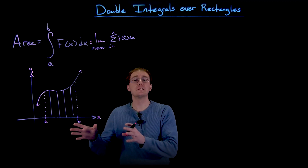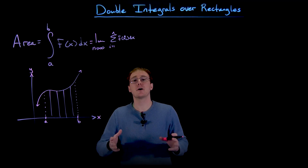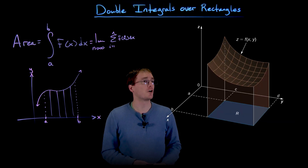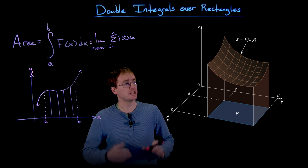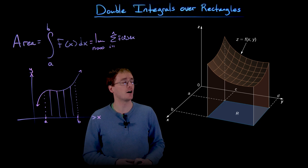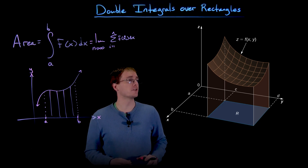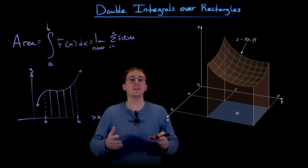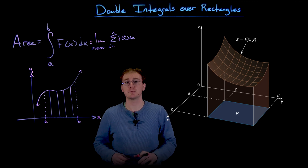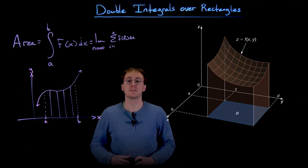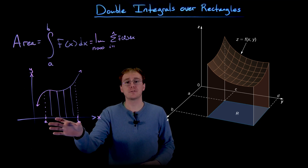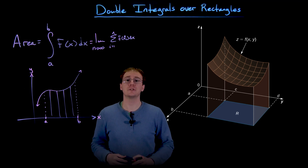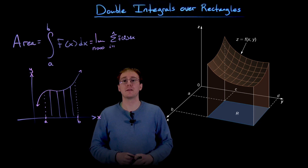We're going to be working with basically a three-dimensional version of the situation we were just talking about, and since it's harder to draw in 3D we'll use a computer image instead. Here is a picture of our new scenario: we are trying to find the volume underneath our surface given by z equal to a function of x and y. So instead of taking our interval of x values from a to b and slicing it into equal-width sub-intervals, we're going to take our rectangular region r and slice that up into a bunch of equal-width rectangles.